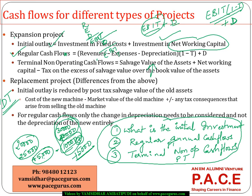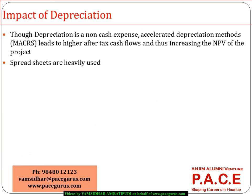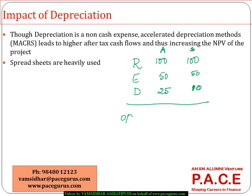We will take up examples for both expansion and replacement projects to find their worthiness using NPV and IRR analysis. To understand how depreciation plays a role in cash flows, consider two methods with the same revenues and expenses: an accelerated depreciation method with depreciation of 25, and a straight-line depreciation method with depreciation of 10.